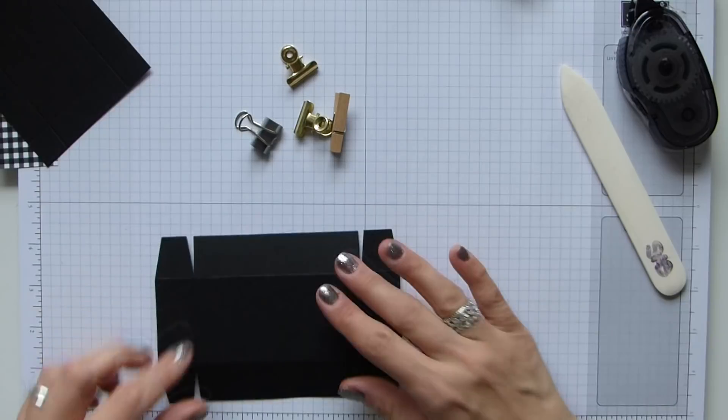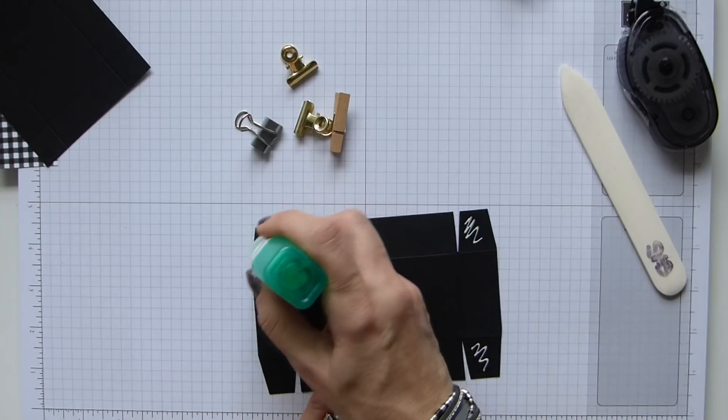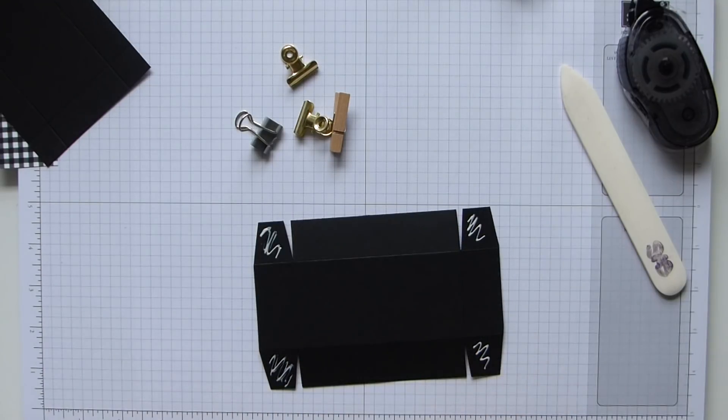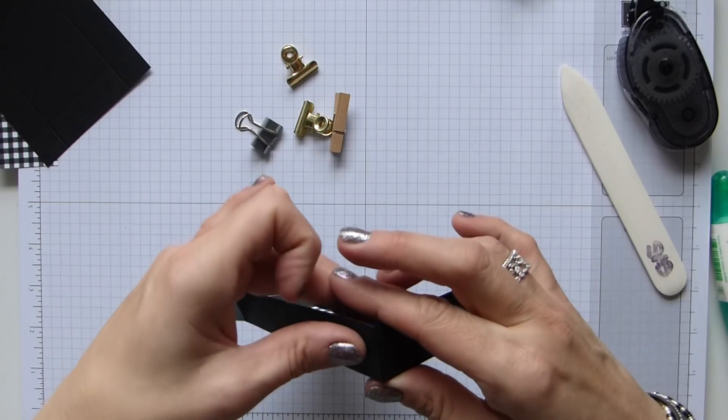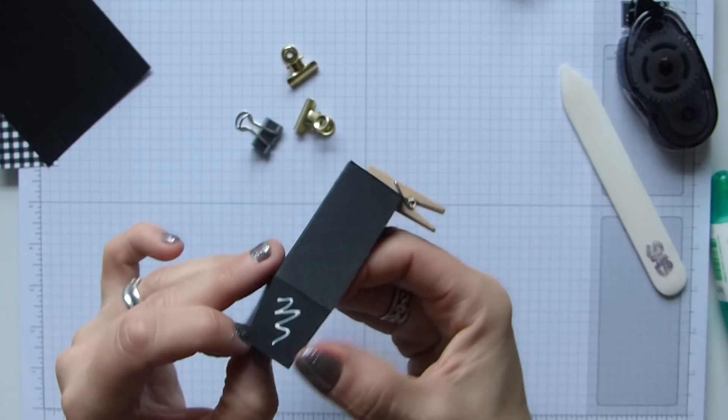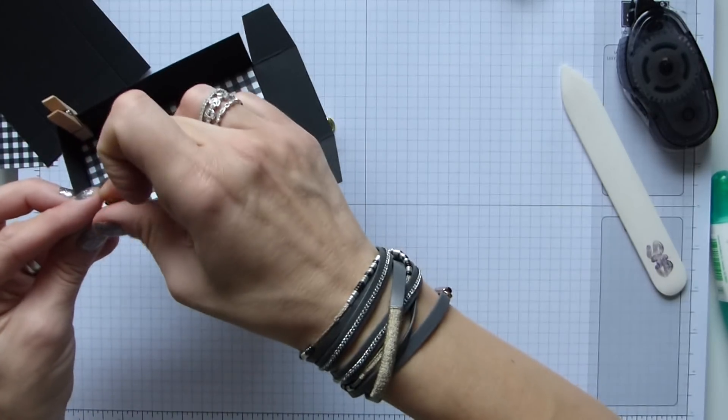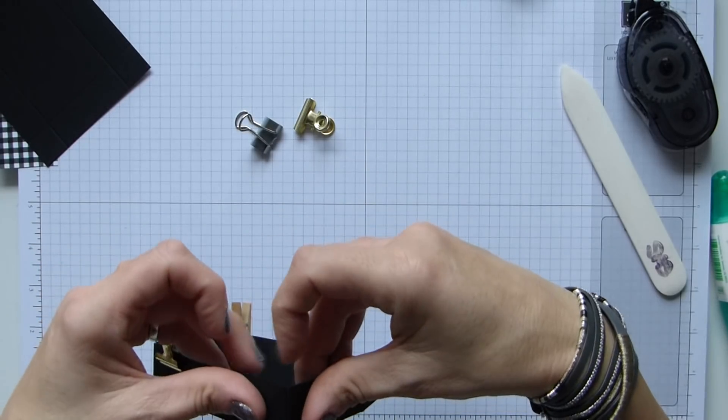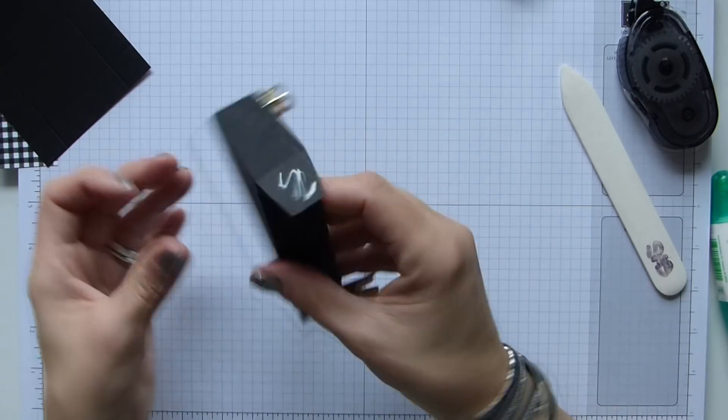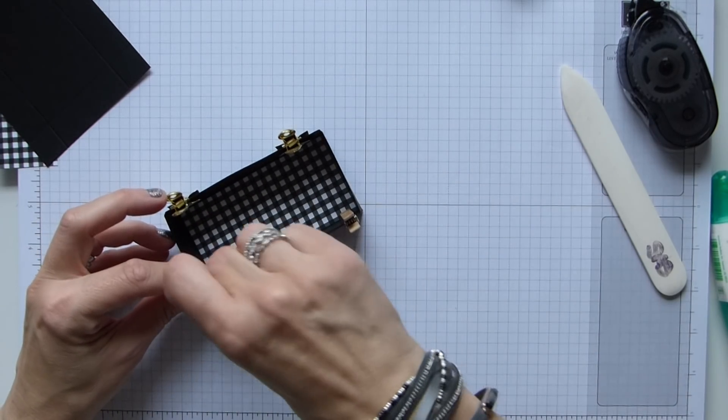So that just sits on the inside. And then I'm going to use my wet glue just on the tabs here. And then as you know, I just fold one in, line those edges up and pop a clip just to hold it in place while I do the rest. And that one is on there. And then the last two, fold in, line up and pop your clips on.